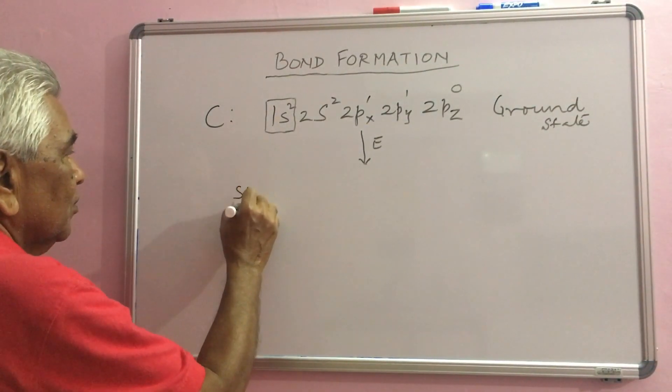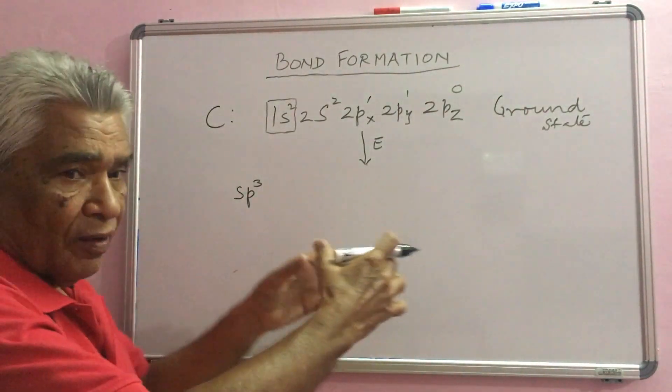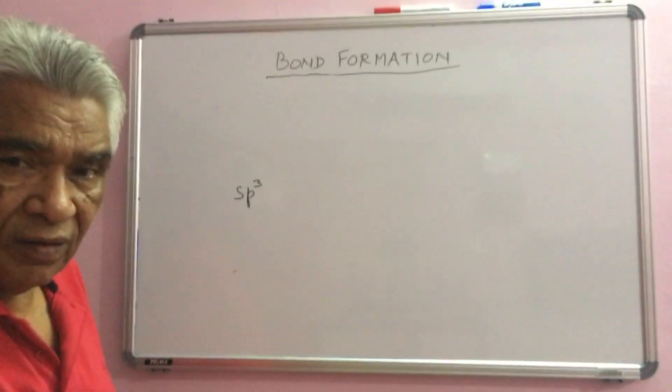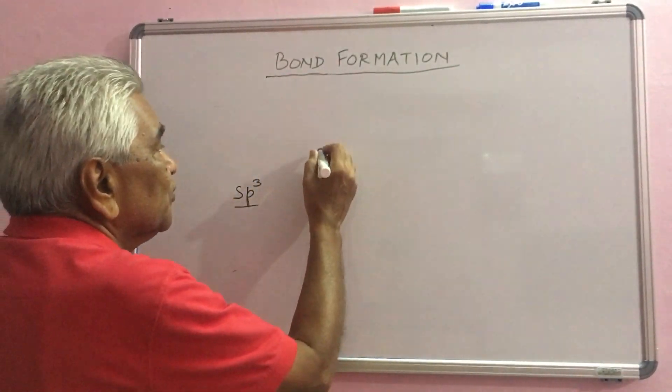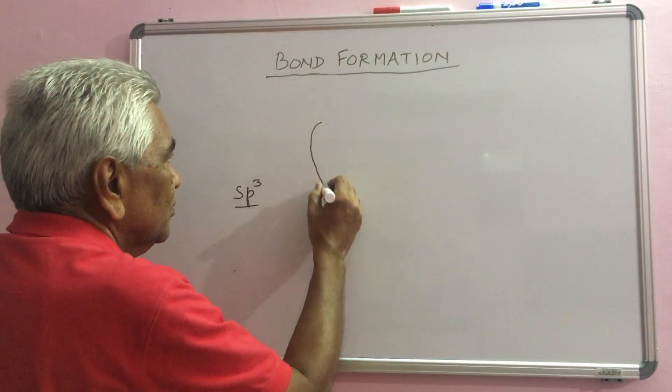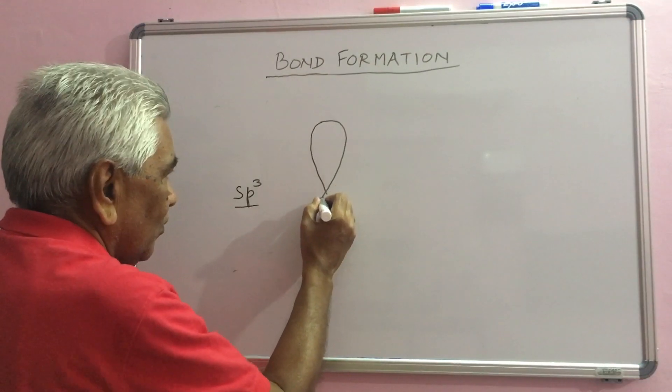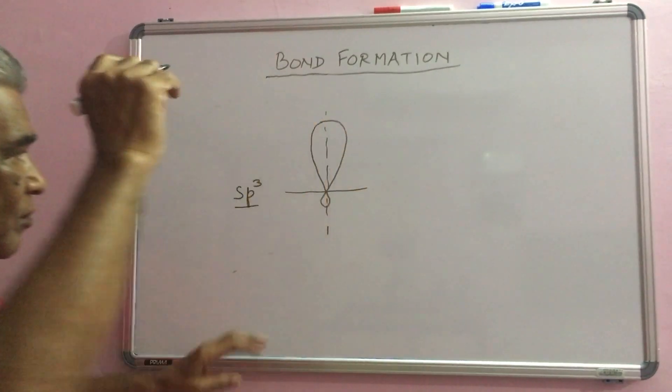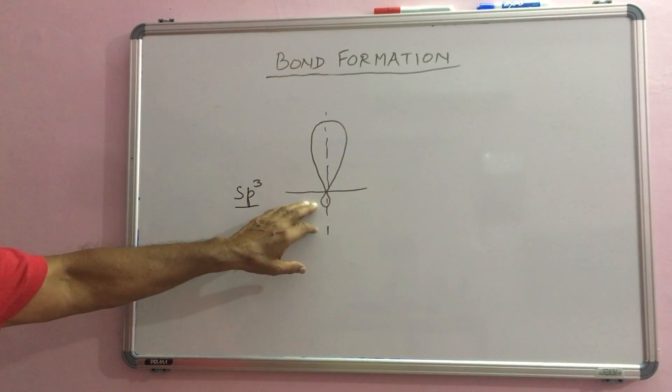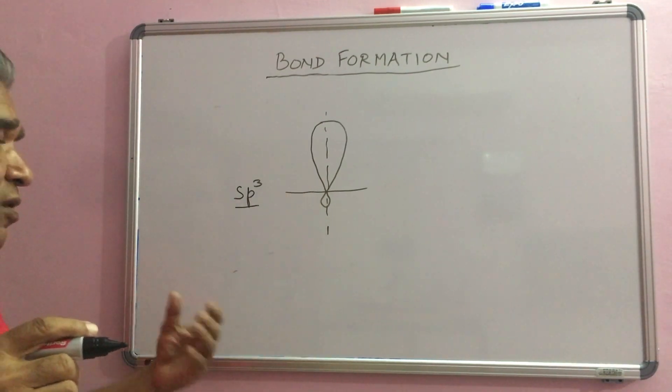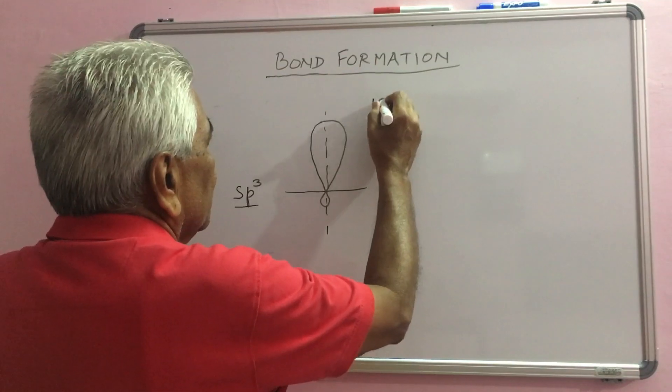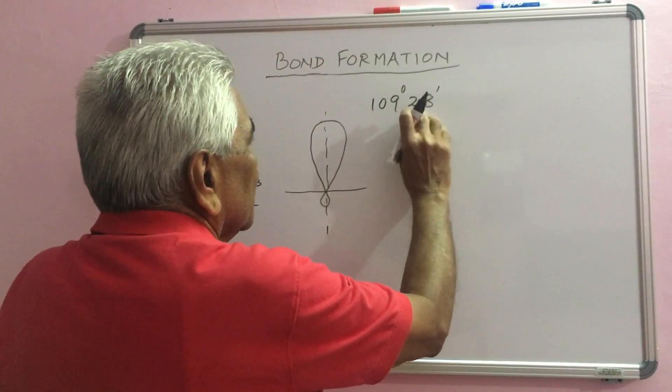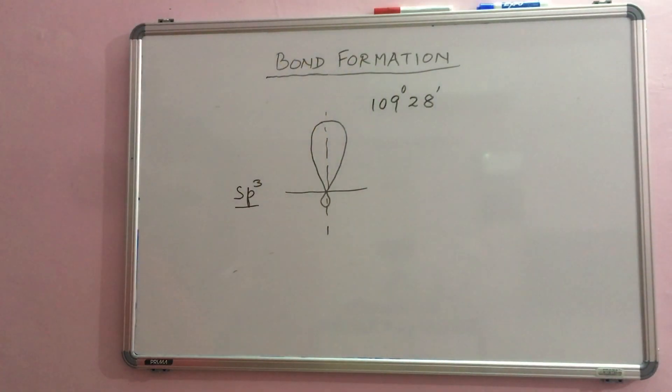In SP3, all the 4 orbitals have blended and the shape of the hybrid orbitals... These 4 orbitals are inclined to each other at an angle of 109 degrees and 28 minutes.